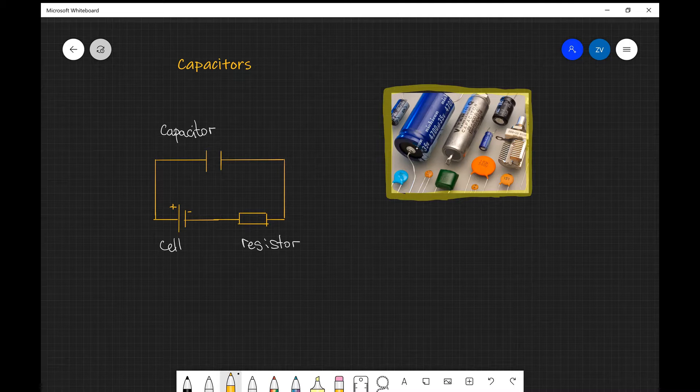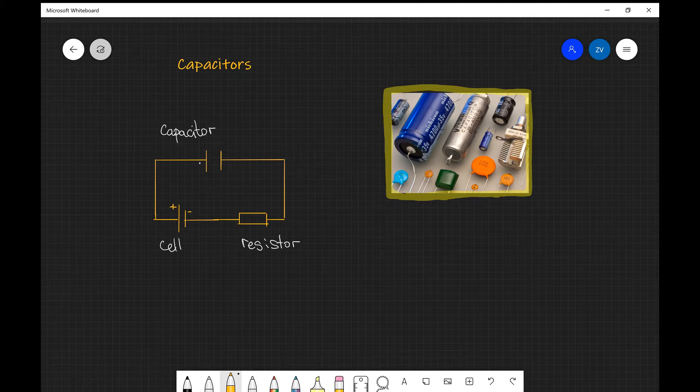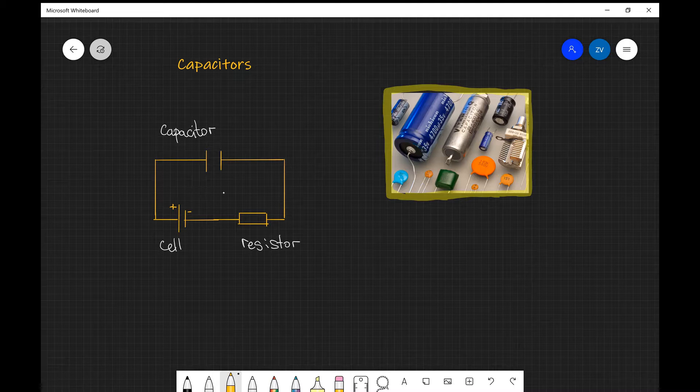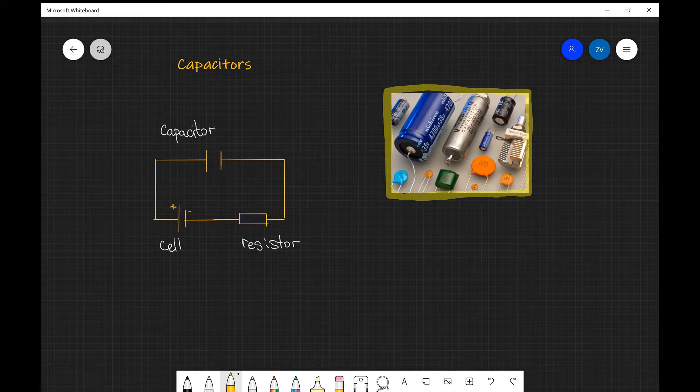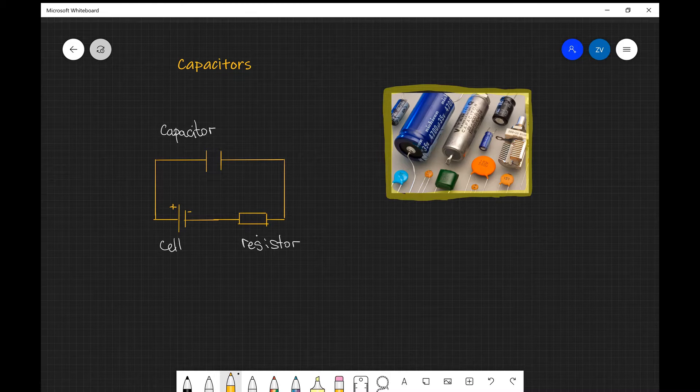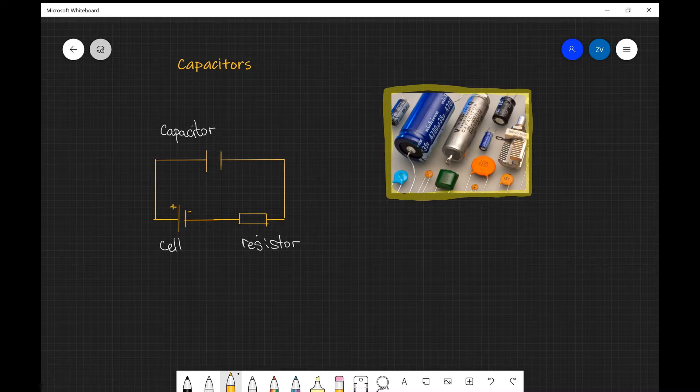The electrical symbol for a capacitor is illustrated here on this diagram on the left. We have a pretty simple circuit in which we have a capacitor connected to a cell and a resistor, and in this circuit the capacitor will start charging.